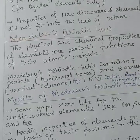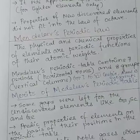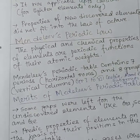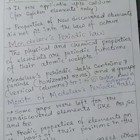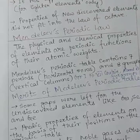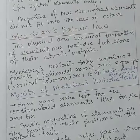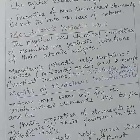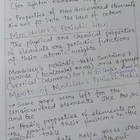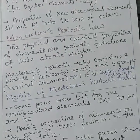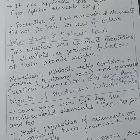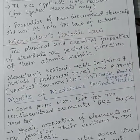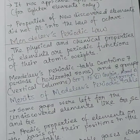After that, Mendeleev came with his periodic law and was known as the father of the periodic table. Mendeleev's periodic law states that the physical and chemical properties of elements are periodic functions of their atomic weights — note: atomic weights, not atomic numbers. Mendeleev's periodic table contains 7 periods as horizontal rows and 8 groups as vertical columns. Groups 1 to 7 contain subgroups A and B, but Group 8 has no subgroups.